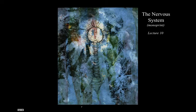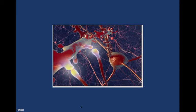Today we're going to take a look at the nervous system, lecture 10. I've included some interesting art images — this is a monoprint of the central nervous system and another interesting image of synapses.